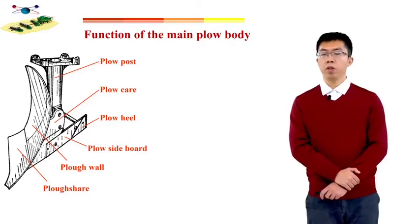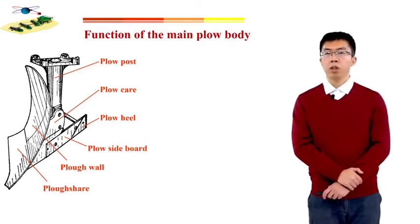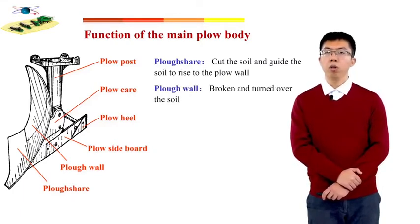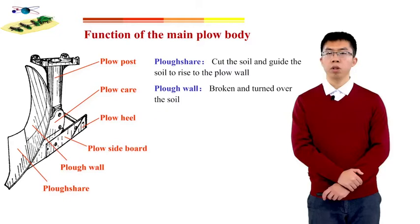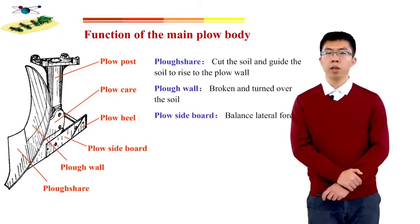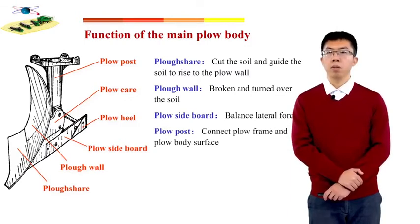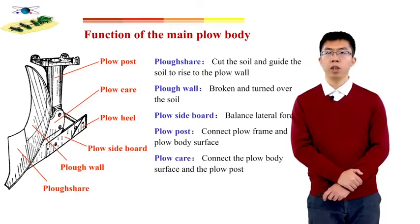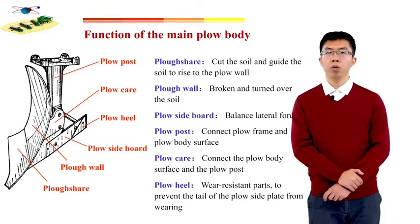The function of each part of the main body: the plow shell is to cut the soil and get the soil to rise to the plow wall. The plow wall is to break and turn over the soil. The plow sideboard is to balance lateral force. The plow post is to connect the plow frame and the plow body surface. The plow heel is to resist the lateral force and prevent the tail of the plow sideboard from wearing.